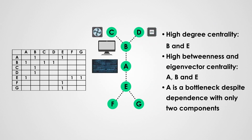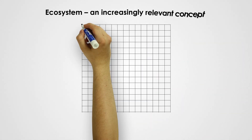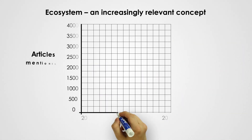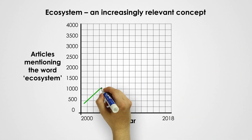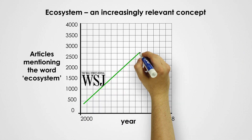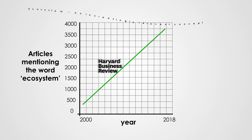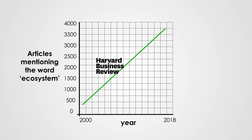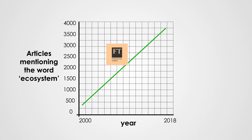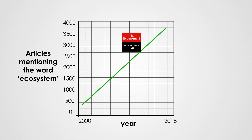Bottleneck components, which can limit the ecosystem's growth, tend to have high centrality. Much literature already exists on organisational networks. Now, literature focusing on ecosystems is undergoing vibrant growth.